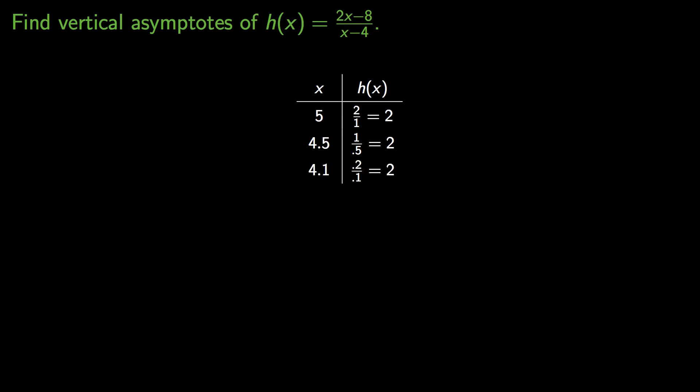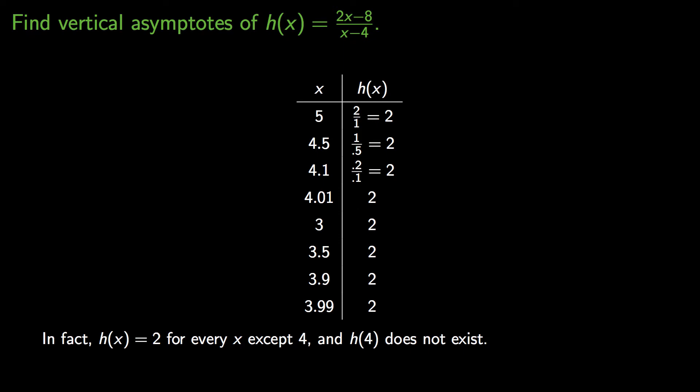In fact, no matter what I plug in, it appears that I get a y value of 2. And so it turns out that h of x is literally equal to the number 2 for every x except 4. And in that exception, h of 4 just does not exist because when you try to plug in 4, you get 0 over 0.